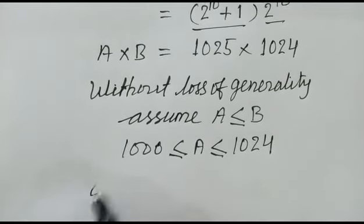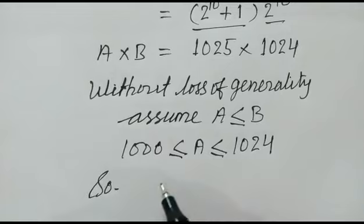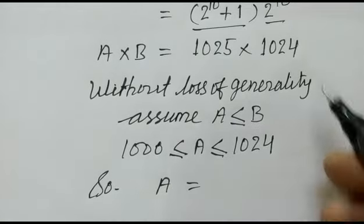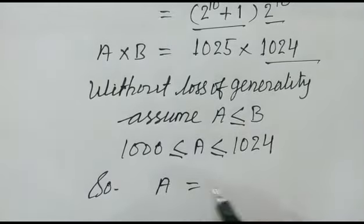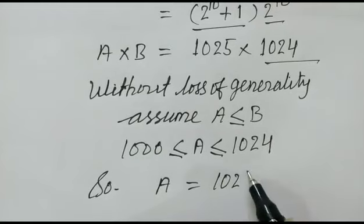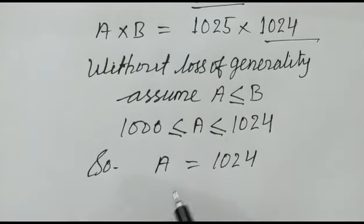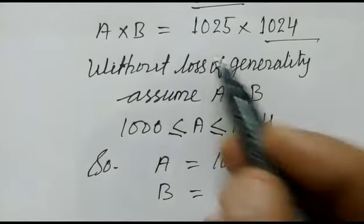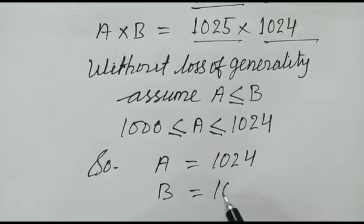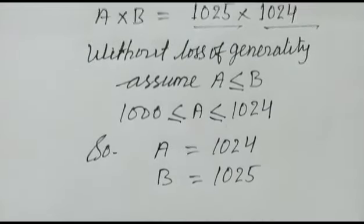So we can safely say A is equal to 1024 and B is equal to 1025.